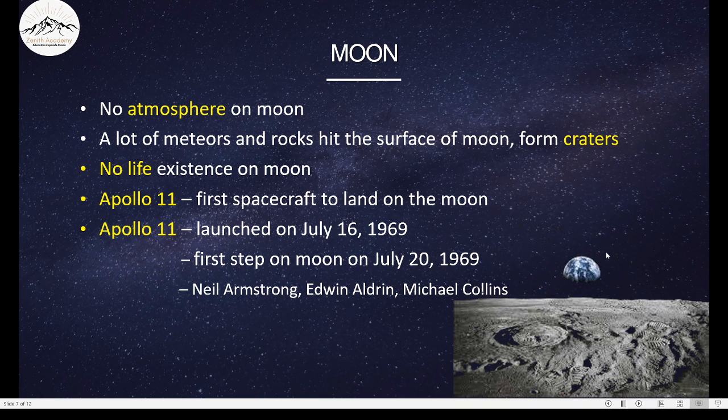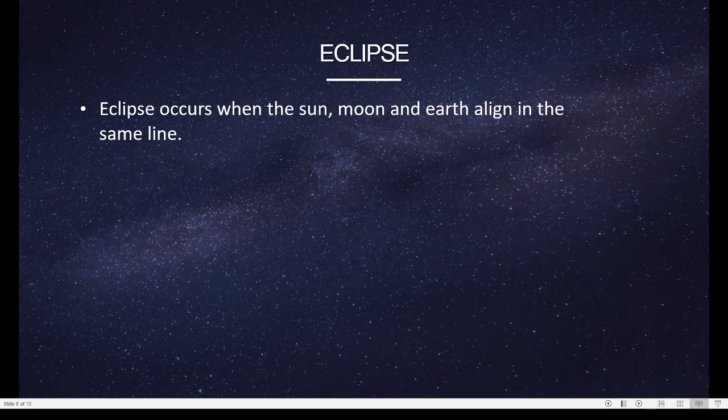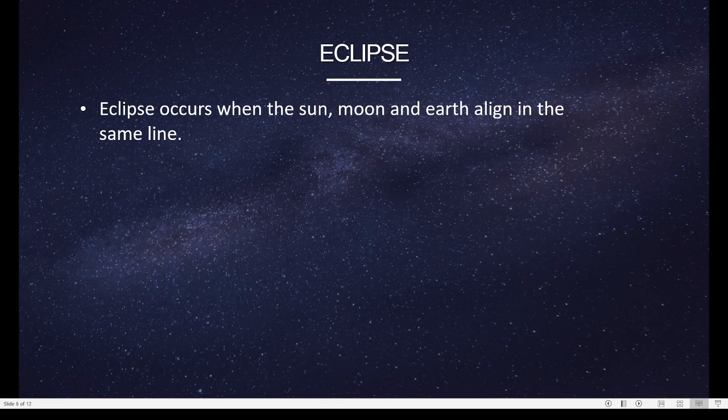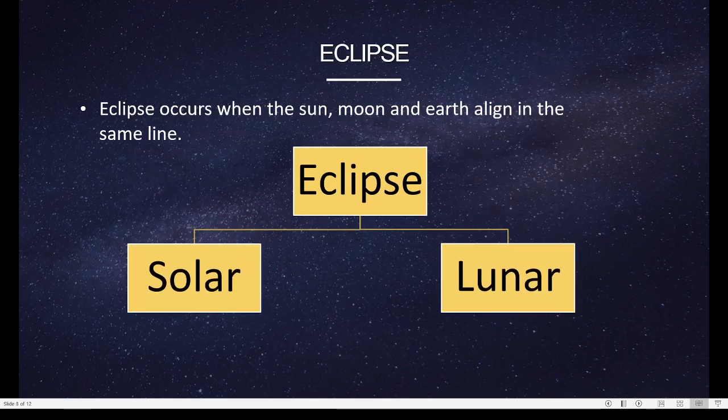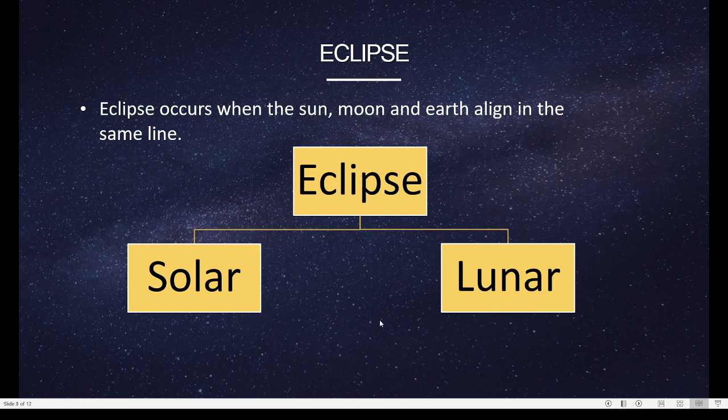Now, let's learn another interesting phenomena, that is an eclipse. We know that the Earth revolves around the Sun, and the Moon revolves around the Earth. And therefore, at some point, they are going to align. They are going to be in the same line. And this causes the eclipse. Our eclipse is of two types. There are two types of eclipses. There is a solar eclipse, and there is a lunar eclipse. Let's learn what these are.